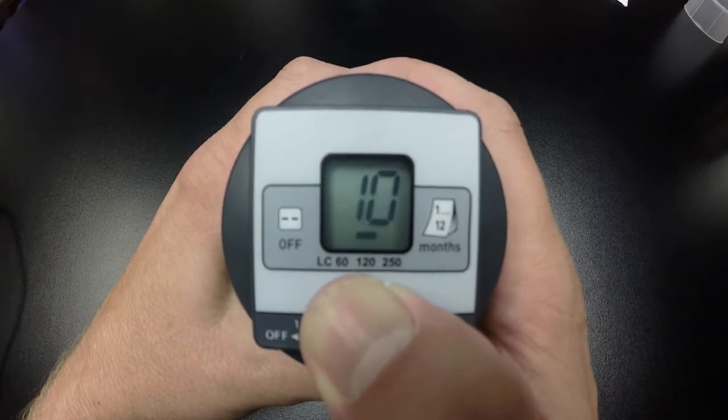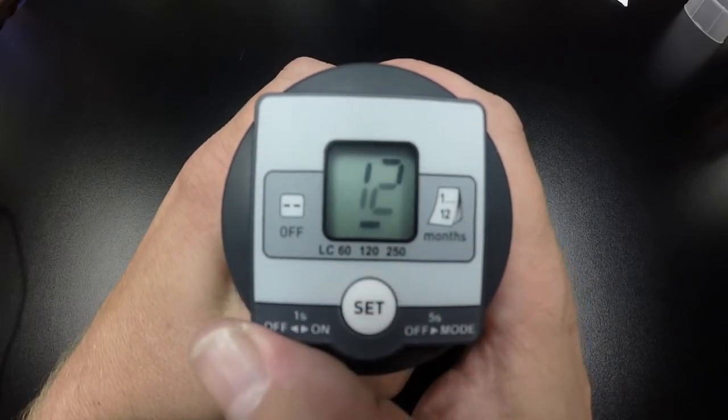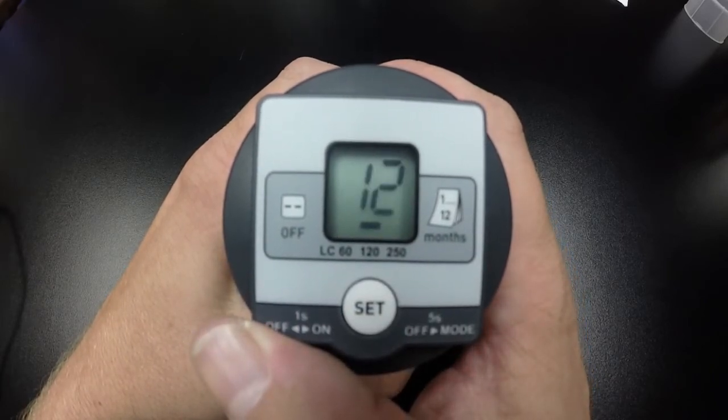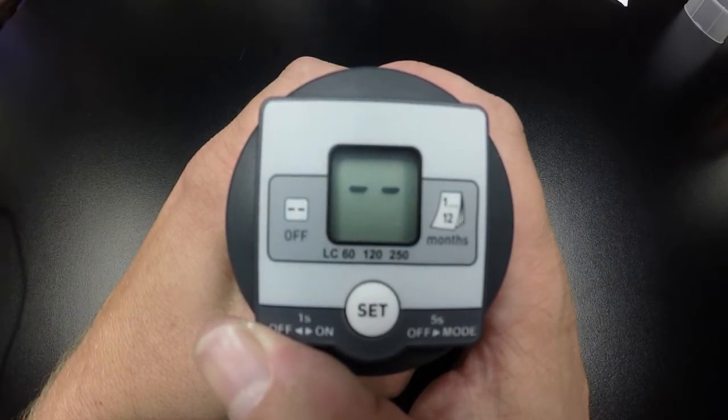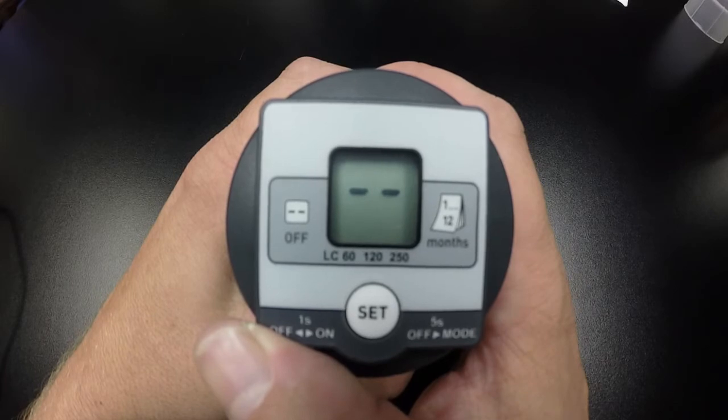Wait 3 seconds and the setting is automatically saved. The display screen will show the selected lubrication canister size and discharge month, and then the lubricator will automatically shut off, which is indicated by double lines.